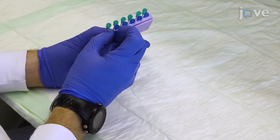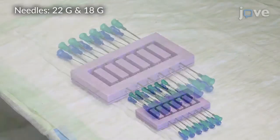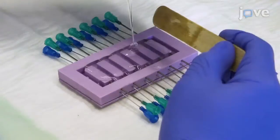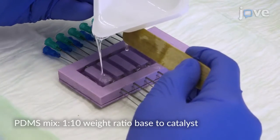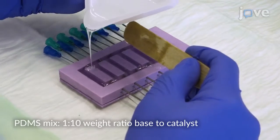To begin, insert the blunt end needles to the appropriate position within the device mold and cast approximately 20 grams of polydimethylsiloxane, or PDMS mix, for one set of the device and lid.